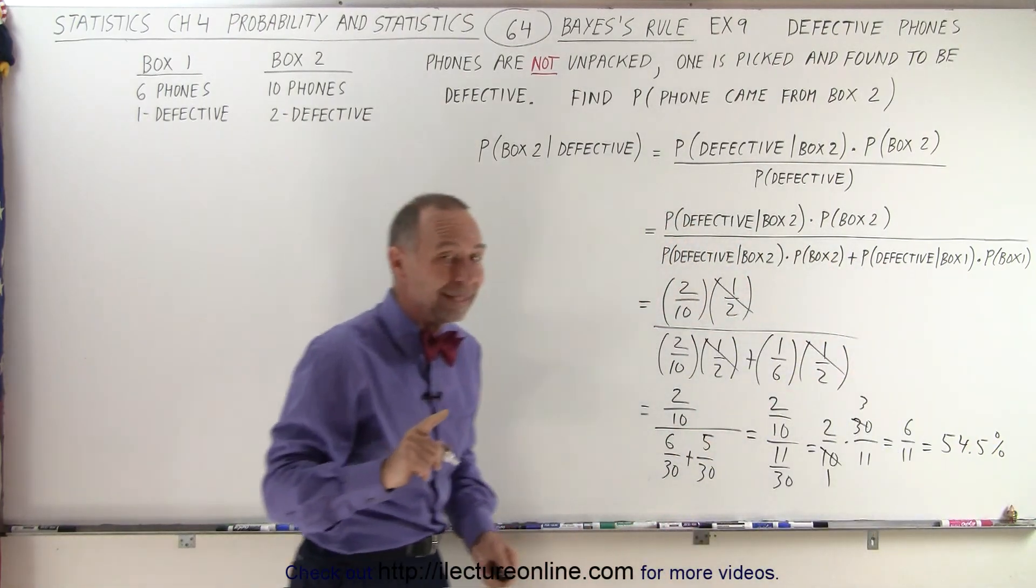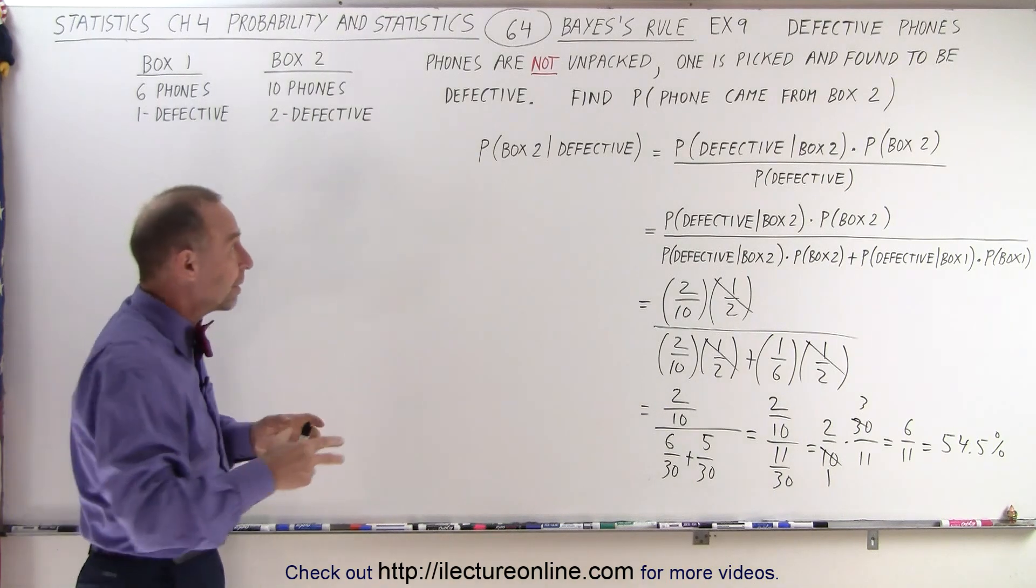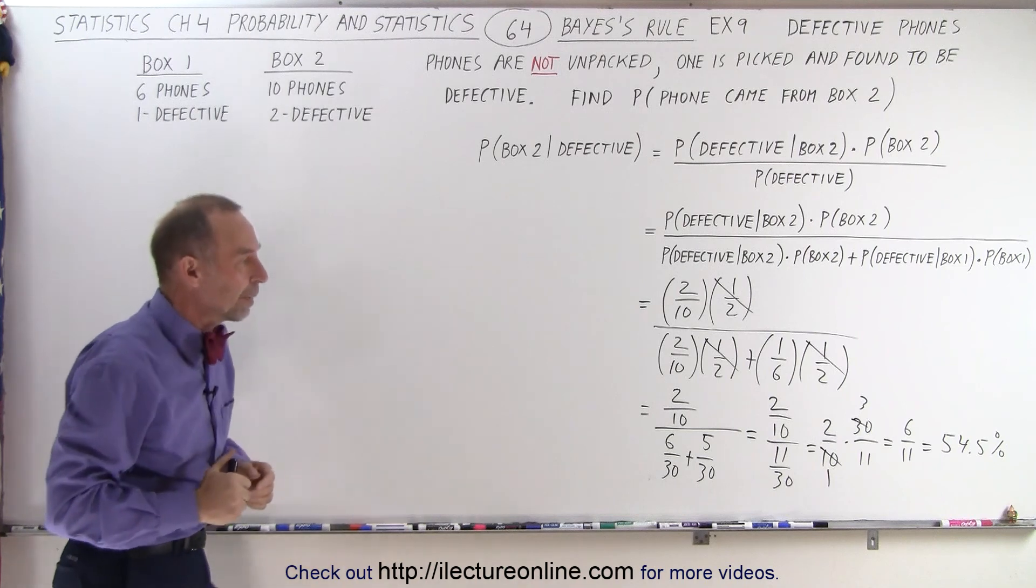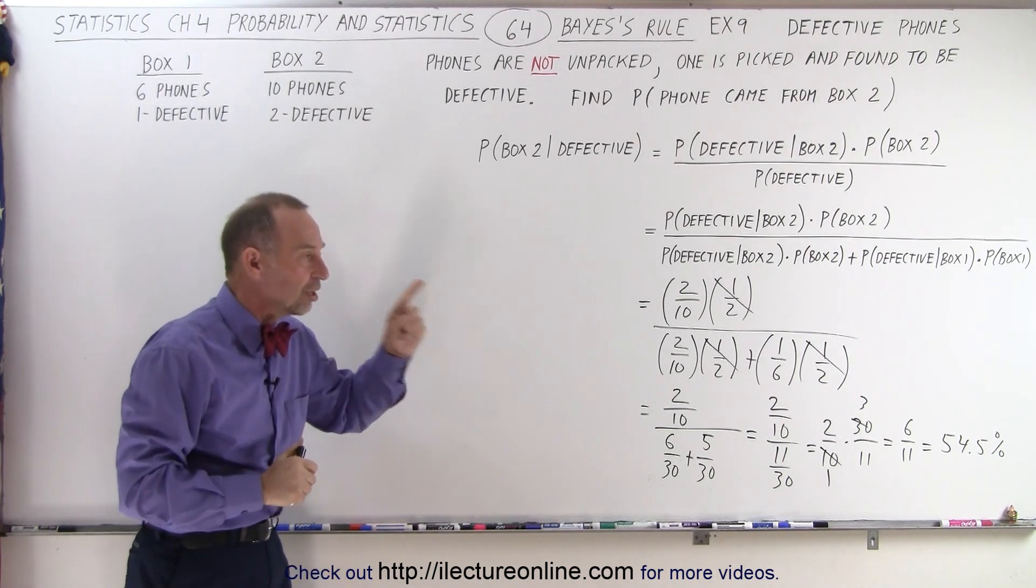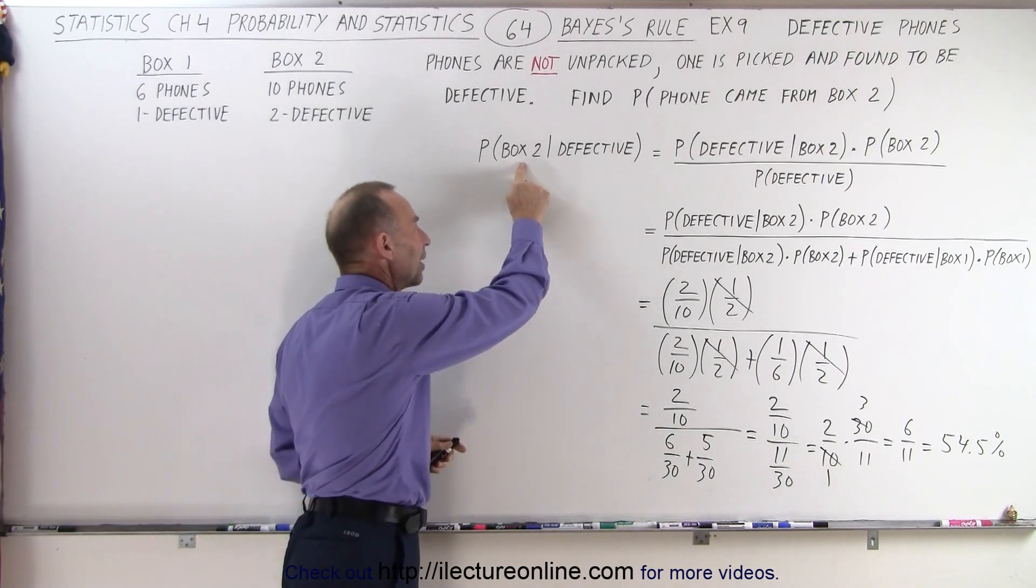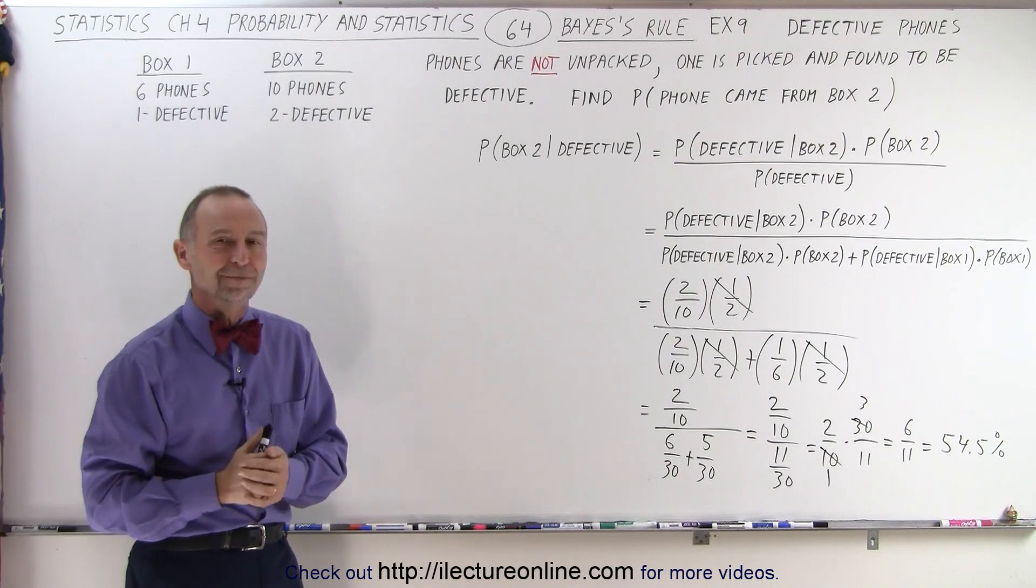So now you see that the probability is lower that it came from box two, because we had an equal probability that we had picked a phone out of box one, or a phone out of box two. And you see how that changes the way that we calculate a probability that it came out of box two, given that the phone we picked was defective. That is how it's done.